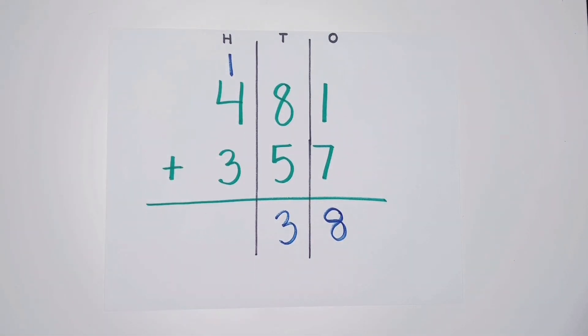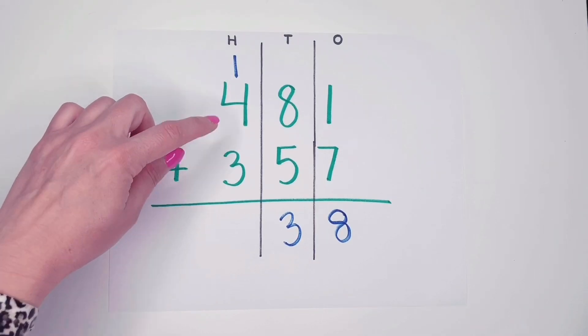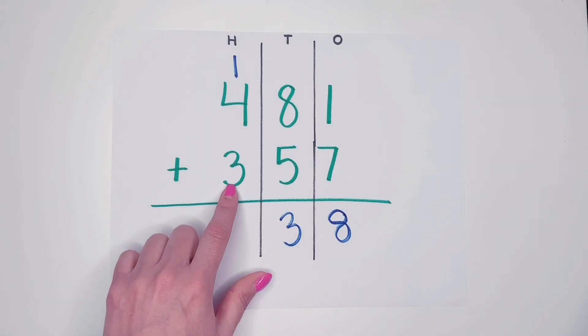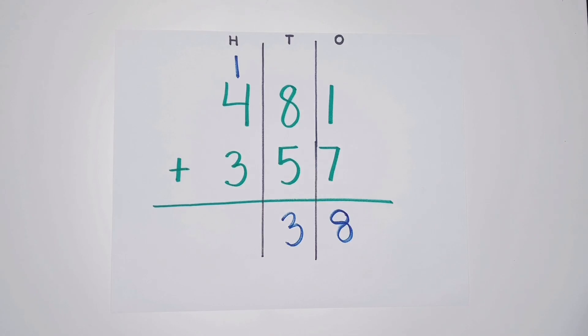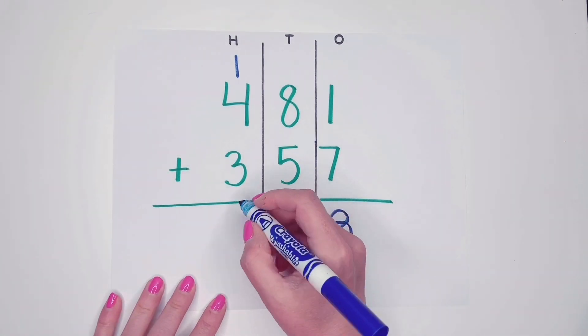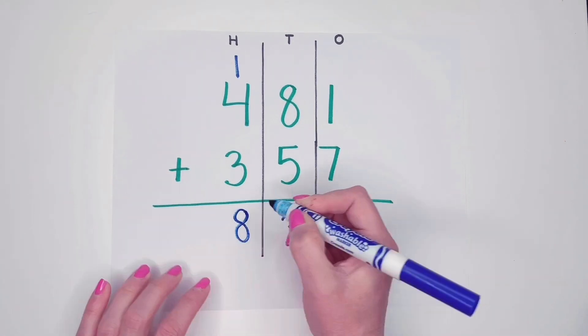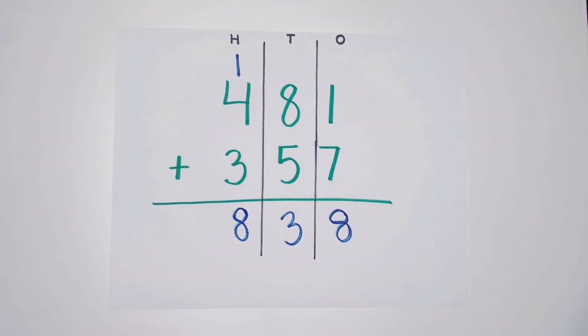So now we're going to add down. One hundred plus four hundred is five hundred plus three is eight hundred. Or one plus four plus three is eight. Remember, we're really talking about hundreds though. So our answer to 481 plus 357 is 838.